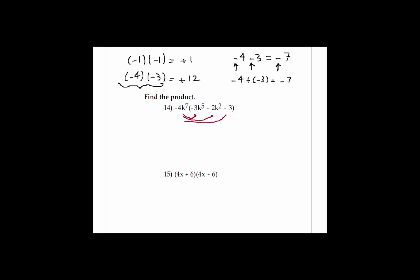Plus 12. Can I see a checkmark if you follow that? So it would be 12k to the power of what? If k^7 times k^5, did you put 35?